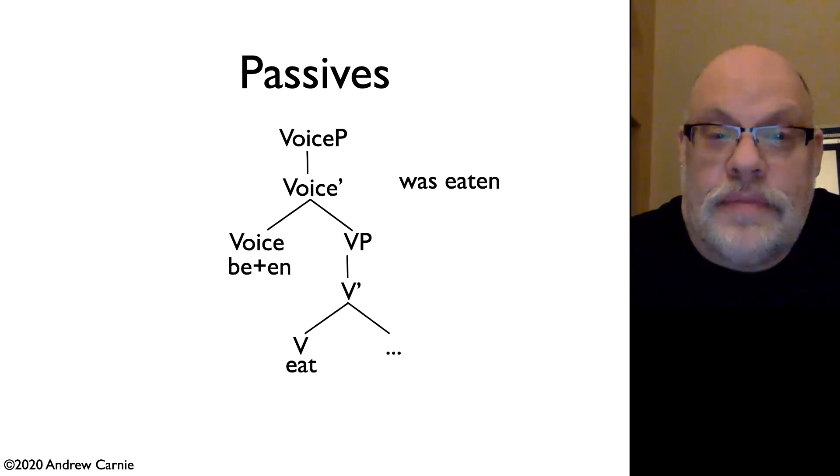Passives, same thing. Remember a passive is marked by the verb to be plus a participle. Here again, represented by the -en suffix. So the passive voice taken together is be plus -en, which is why they sit here together under this voice head. The voice head is X-bar theoretic.